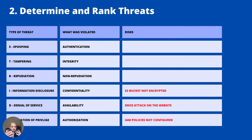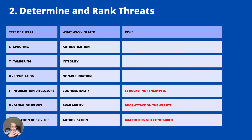Now for the third step: what can we do about it? First, you need to map the risks into the STRIDE framework. I've deliberately left the first three rows blank so you can practice filling them in. For example, under Information Disclosure the S3 bucket may not be encrypted; under Denial of Service there could be a DDoS attack; under Elevation of Privilege, IAM policies in AWS may not be configured properly, allowing a user to elevate their role.